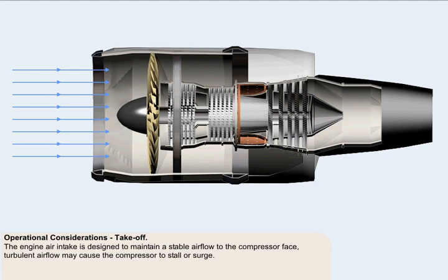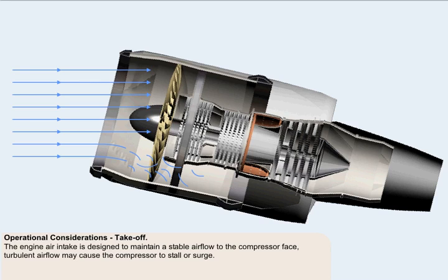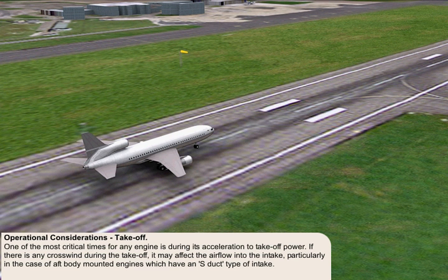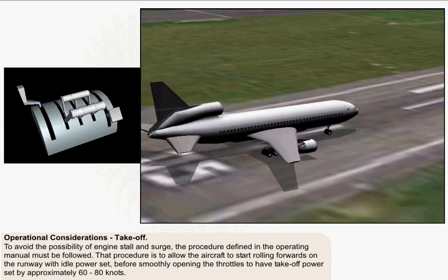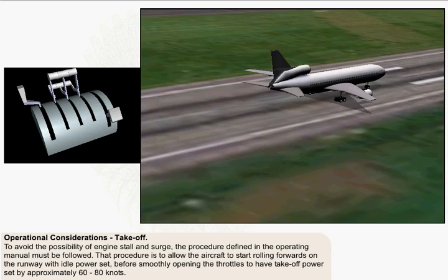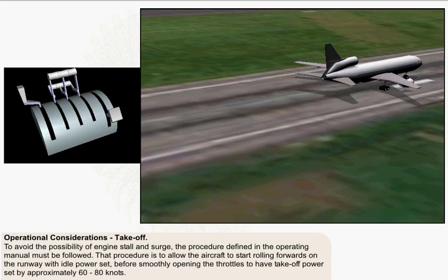The engine air intake is designed to maintain a stable airflow to the compressor face. Anything that disrupts the airflow and causes it to be turbulent may cause the compressor to stall or surge. An intake operating at high angles of attack cannot be expected to maintain a stable airflow. One of the most critical times for any engine is during its acceleration to take-off power. If there is any crosswind during the take-off it may affect the airflow into the intake, particularly in the case of aft body-mounted engines which have an S-duct type of intake. To avoid the possibility of engine stall and surge, the procedure defined in the operating manual must be followed. Typically for this type of aircraft that procedure is to allow the aircraft to start rolling forwards on the runway with idle power set before smoothly opening the throttles to have take-off power set by approximately 60 to 80 knots. This procedure is termed a rolling take-off.